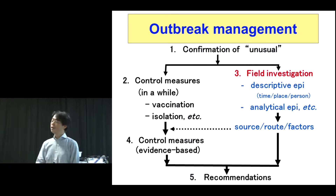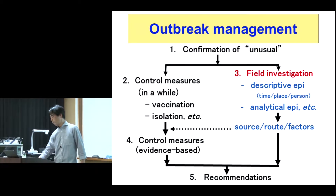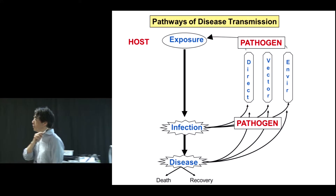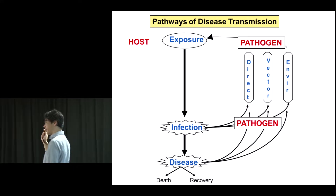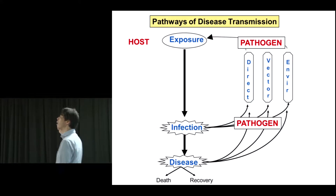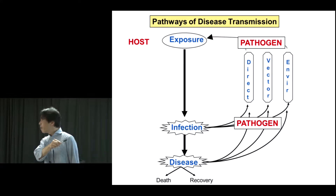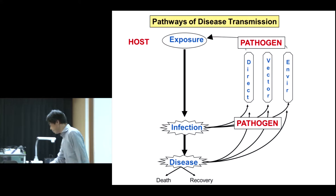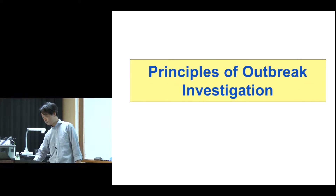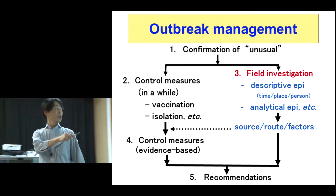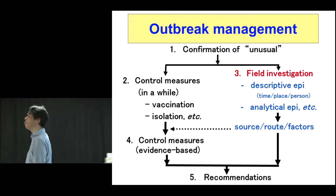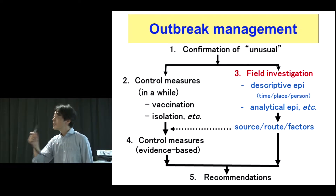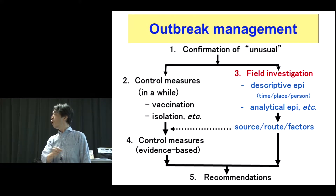This chart might be useful here. Because this chart, combined with common sense and textbook knowledge, gives you some idea about how to control a communicable disease among the human population in the meantime. However, control in the meantime is just in the meantime. After field investigation, we have some idea about the direct source of the outbreaks.